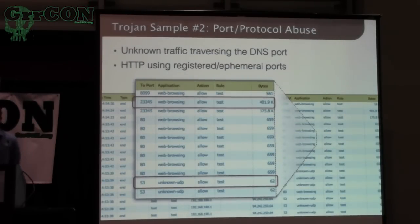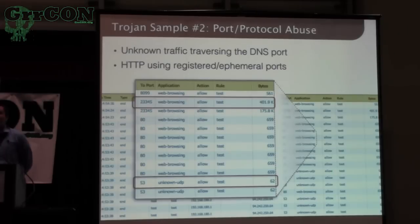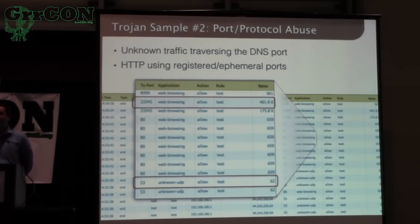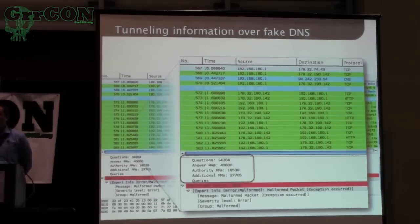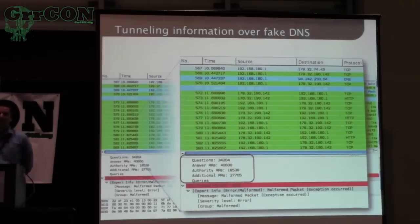Let's take a quick look at one more — Trojan Sample Number Two. Looking at the logs it produces on the firewall, we see a couple of things out of the ordinary: web browsing over high restricted or ephemeral ports, and also unknown UDP over the DNS port 53, which is highly suspicious. Looking at the port 53 traffic in Wireshark, the parser cranks on it and the question and answer numbers are off the charts — not real — and then later the parser will crash because it's not valid DNS at all.